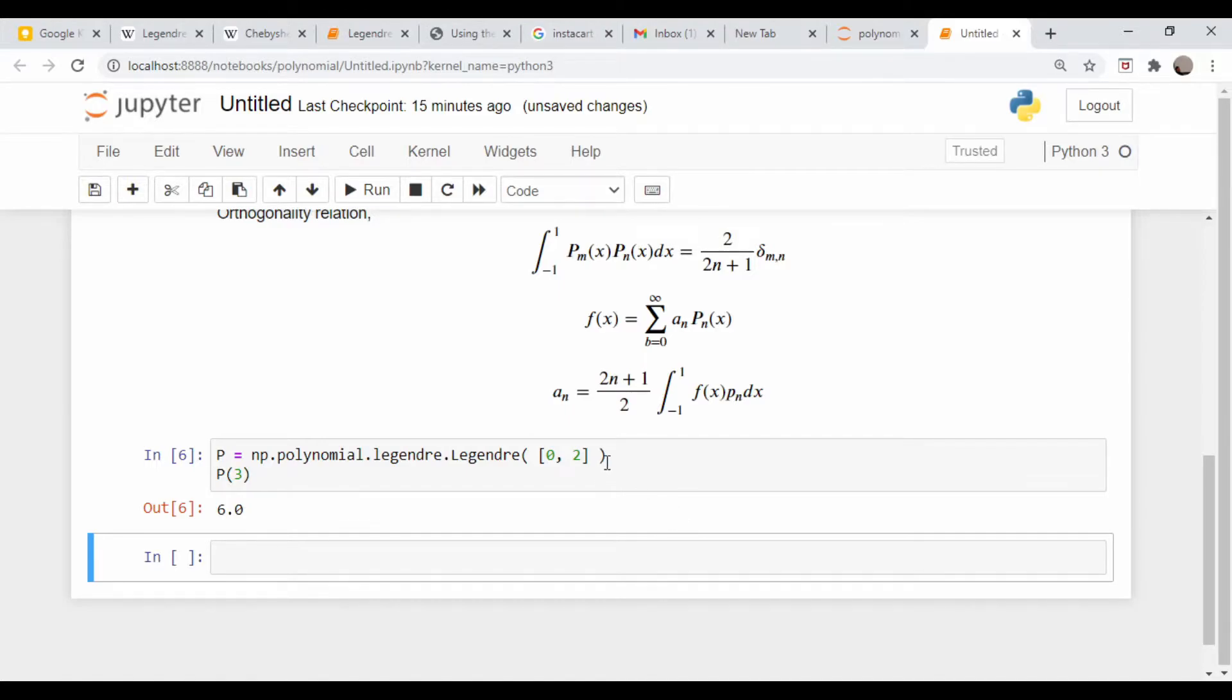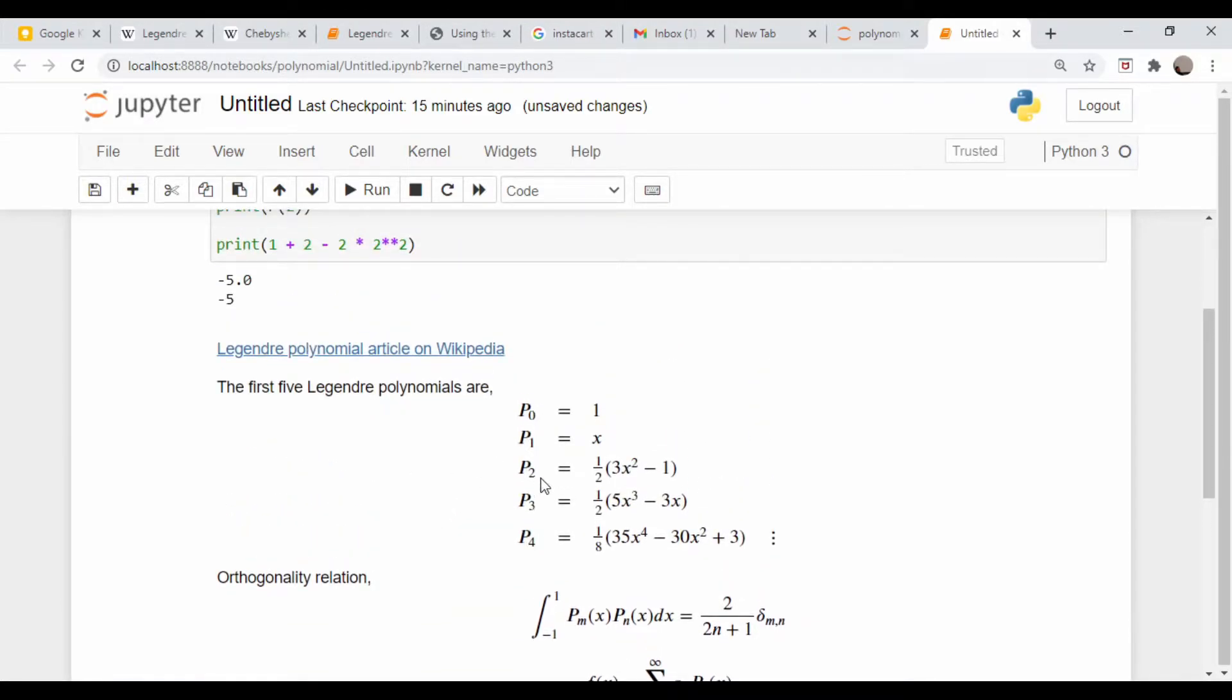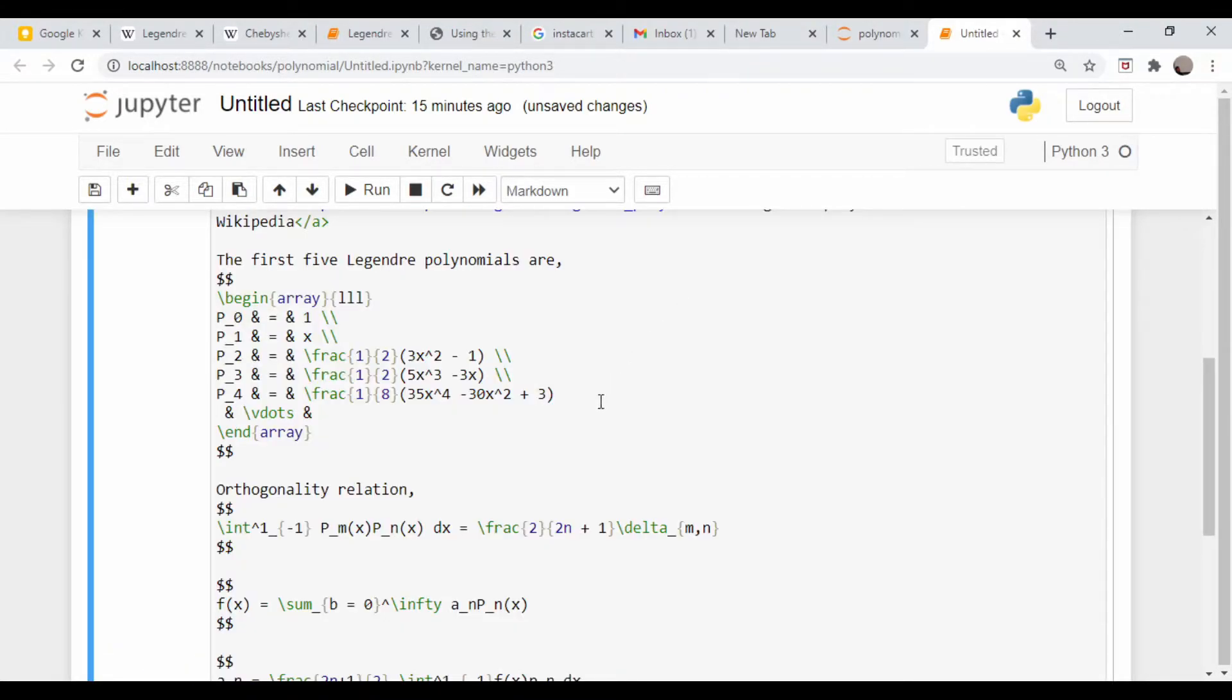Let's confirm that this is doing what we think it is: p of 3 equals 6. So really that's it. It's just a simple way to create a series of polynomials and then use all that machinery that exists in the higher-up classes to manipulate them.